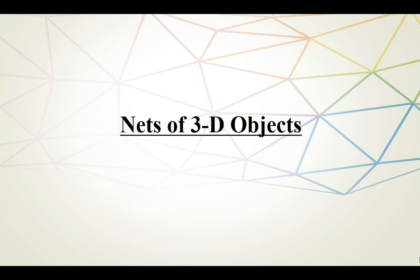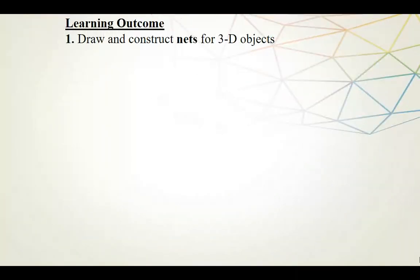Hello again, Grade 8s. In today's lesson, we're going to look at how we can take the net of a three-dimensional object and fold it together to get a three-dimensional object. We'll also look at the reverse process where we have a three-dimensional object and then we unfold it to get the net of that object. Our learning outcome is to draw and construct nets for three-dimensional objects.